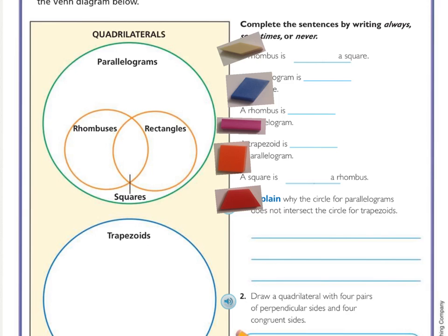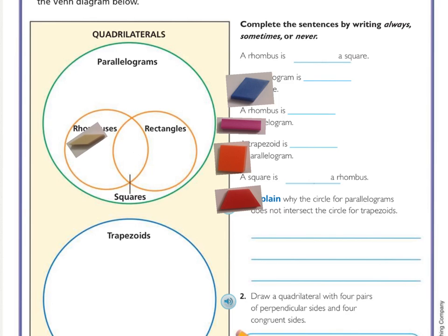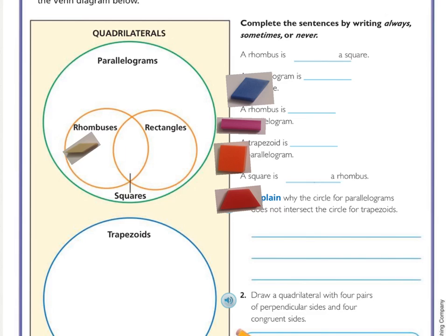Here are some examples based on pattern blocks you may see in the classroom. This brown one is a rhombus — it has four congruent sides, and all the sides are going the same direction, so it's also a parallelogram. It needs to go in just the rhombus section. This blue one also has four sides that are all the same length but not at 90 degrees, so it is also a rhombus.